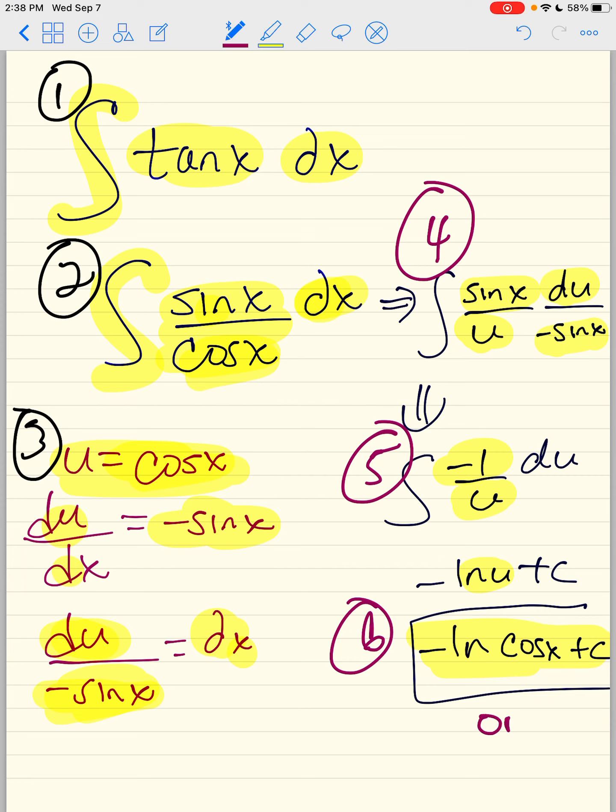Now, it's going to either be this or another way of writing this is natural log of secant x plus c. Because if you put the negative, by using the natural log properties, if you put the negative in front, 1 over cosine x is secant. So either one of these is good to go.